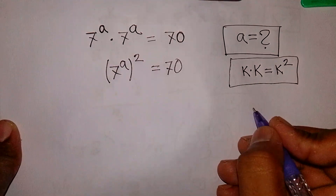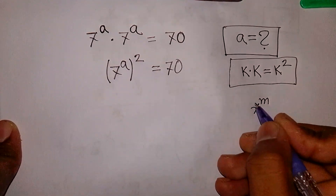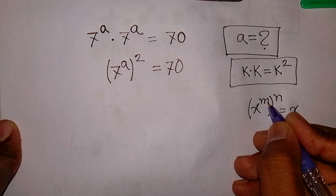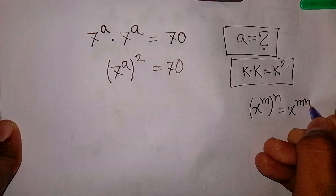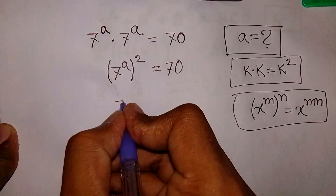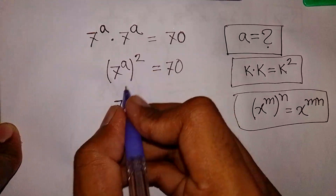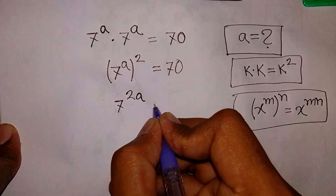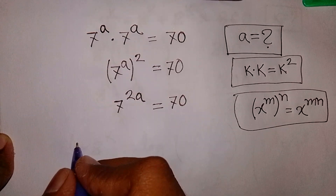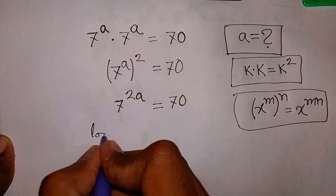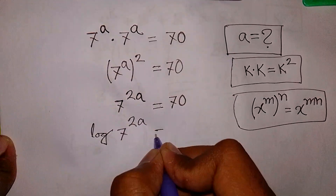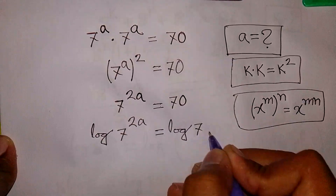Here we apply the exponential rule that x power a, bracket power n, is equal to x power of m times n. According to this rule, 7 power a bracket power 2 is the same as 7 power of a times 2, that means 7 power 2a is equal to 70. Next step, we apply log to both sides: log of 7 power 2a is equal to log of 70.